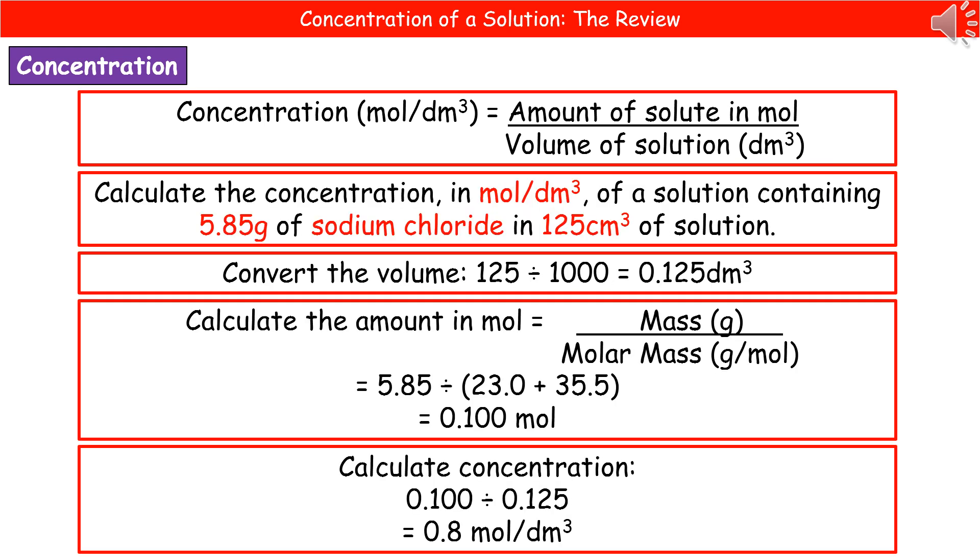So just like before, make those important parts stand out. We're calculating in moles per decimeter cubed. We've got 5.85 grams of sodium chloride and 125 centimeters cubed. So we've highlighted the key parts. First thing, we can see centimeters cubed of the volume, but we need decimeters cubed. So we're going to convert by dividing by 1000. So 125 divided by 1000 gives us 0.125 decimeters cubed as our volume.